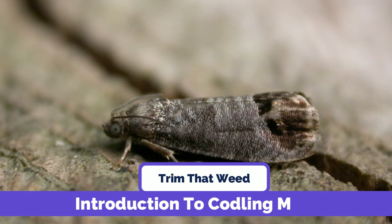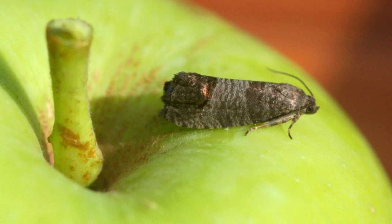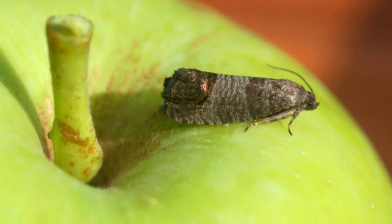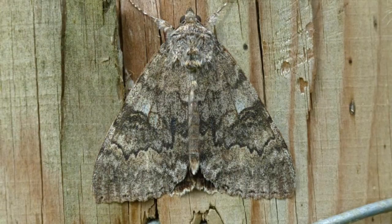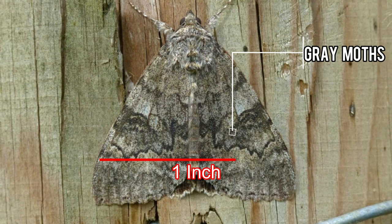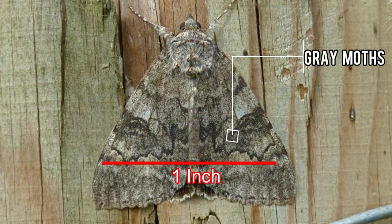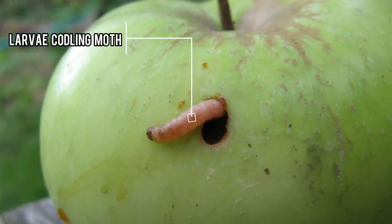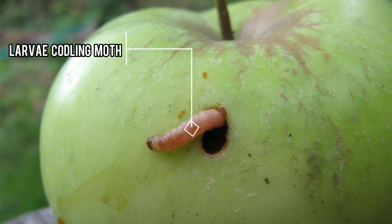Codling Moth is a common pest found in apple orchards and home gardens. They are small gray moths with a wingspan of about one inch. The larvae of the Codling Moth are the most damaging stage, causing damage to the fruit of the apple tree.